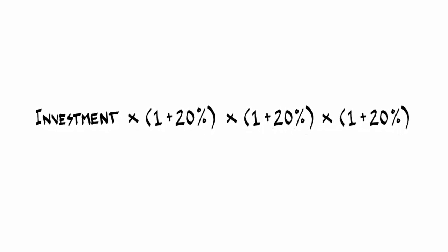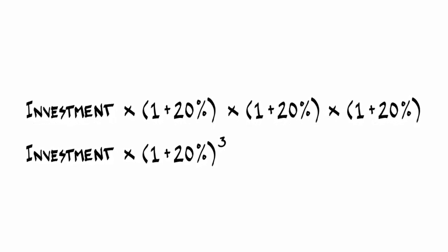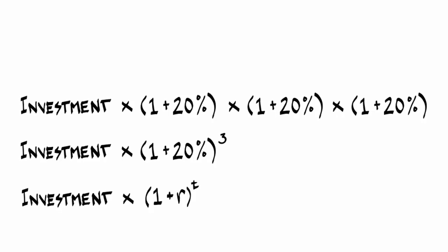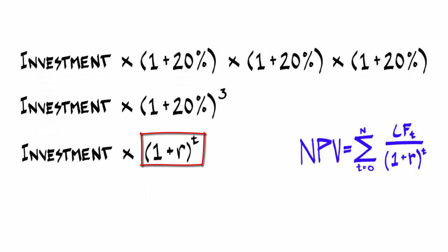And of course, multiplying something by itself three times is the same as raising it to the power of three. And if we were to then substitute R for 20%, since it is the internal rate of return, and T for the value three to represent the number of periods, you will notice that the math starts to resemble the slightly more intimidating formula introduced at the beginning of the video.